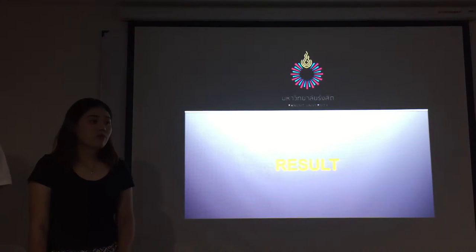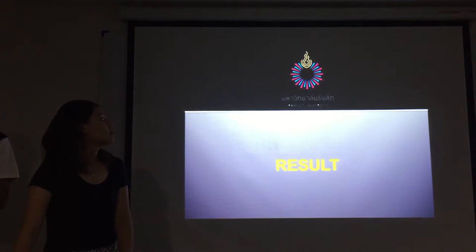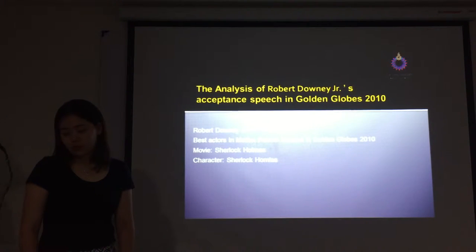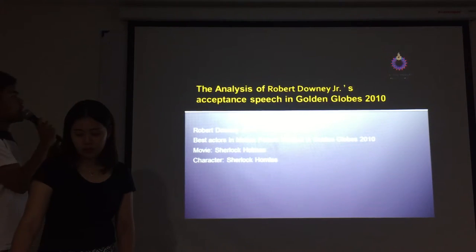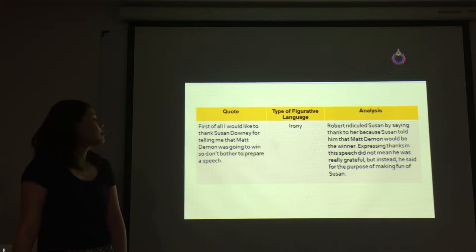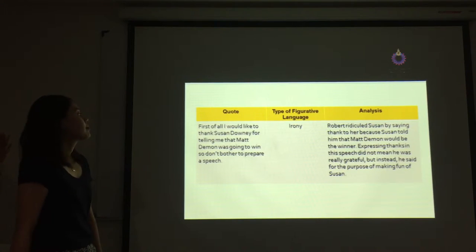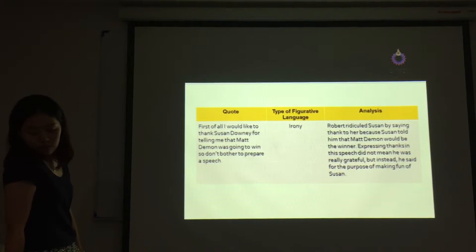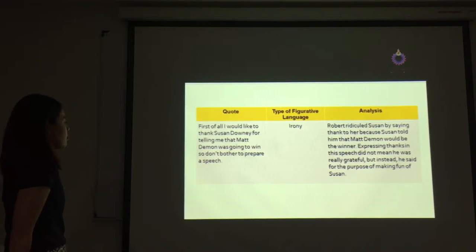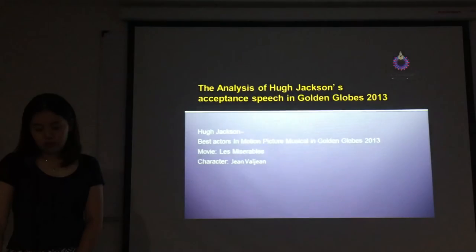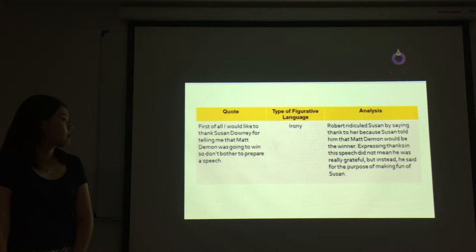Thirdly, the result of this study includes a table of analysis of figurative language from four actors' and four actresses' acceptance speeches in the Golden Globe Awards. The analysis of Robert Downey Jr.'s acceptance speech in Golden Globe 2010 — he said, 'First of all, I would like to thank Suzanne Downey for telling me that McDevon was going to win, so no need to prepare a speech.' Robert ridiculed Suzanne by saying thanks to her, as the thanks in this speech did not mean he was truly grateful, but was instead for the purpose of making fun of her.